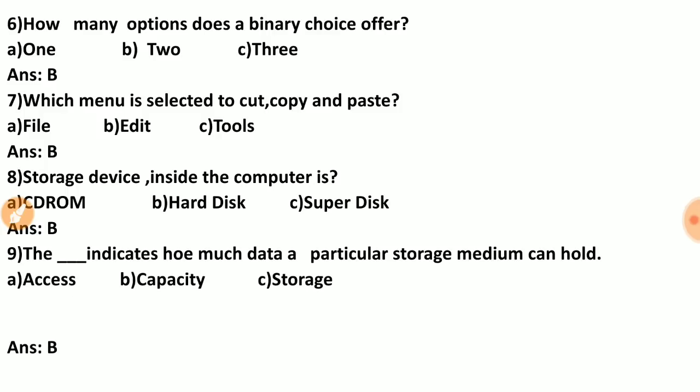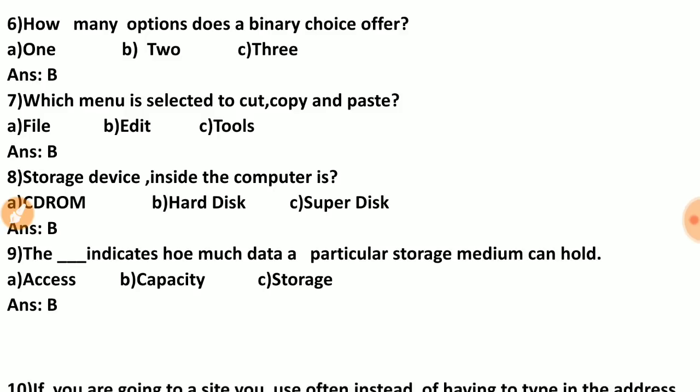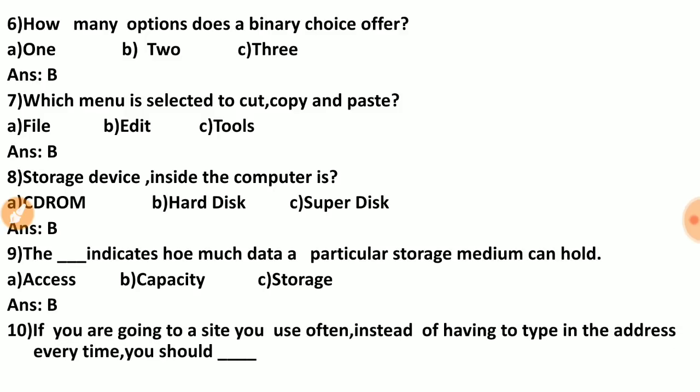Question nine: the dash indicates how much data a particular storage medium can hold. Options include: access, capacity, storage. The correct answer is B — capacity. Capacity indicates how much data a particular storage medium can hold, just like the capacity we know on mobile devices.